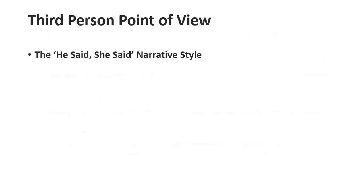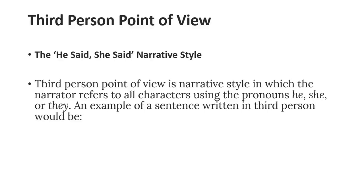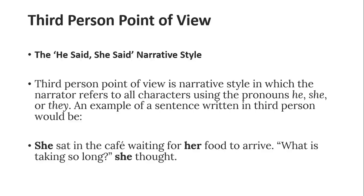Third person point of view is the 'he said, she said, they said' narrative. It is a narrative style in which the narrator refers to all characters using the pronouns he, she, or they. An example: 'She sat in the cafe waiting for her food to arrive. What is taking so long? she thought.' Here 'she' and 'her' are examples of third person point of view.